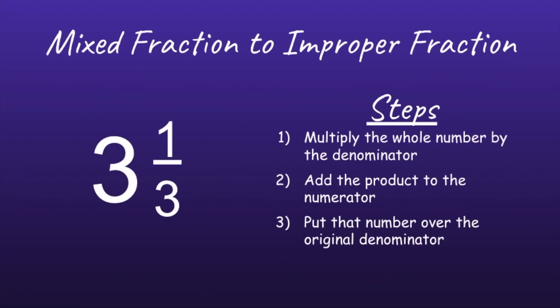So here are the steps to go from a mixed fraction to an improper fraction. Step 1: multiply the whole number by the denominator. So the whole number is 3, and the denominator is 3, and 3 times 3 is equal to 9.